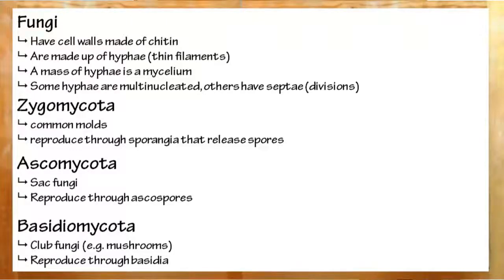Looking closely at hyphae, you can see that some of them are multinucleated, however others have separations between cells, septate. The types of fungi are zygomycota, common molds, these reproduce through sporangia.